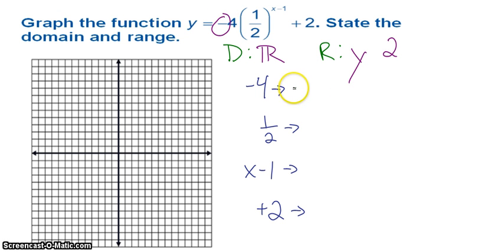Because that a value is negative 4, that tells me I have reflected over the x-axis. So, instead of everything going above, it's going to be below. So, y is going to be less than 2.